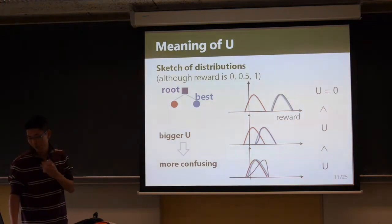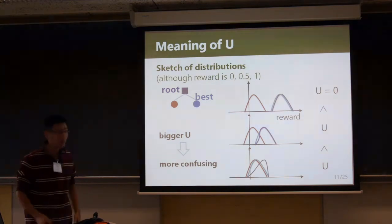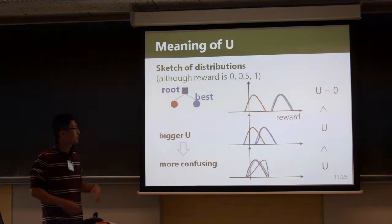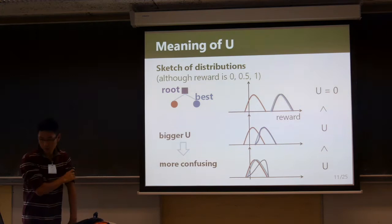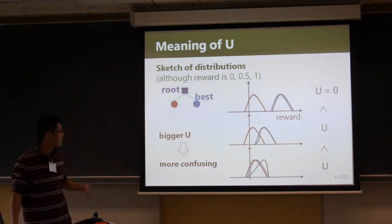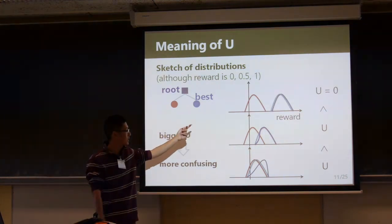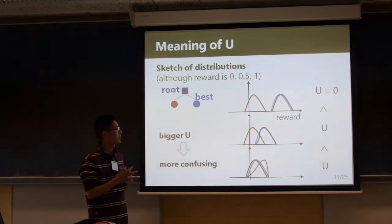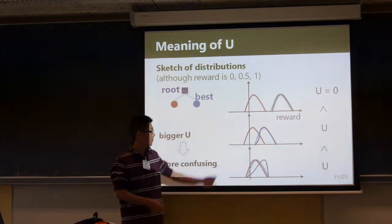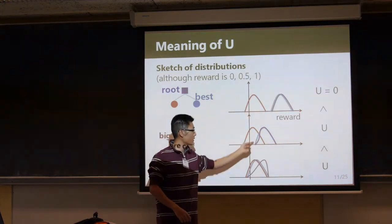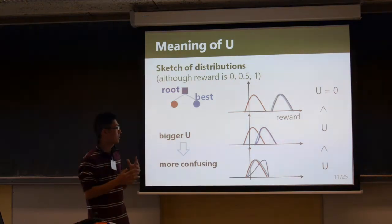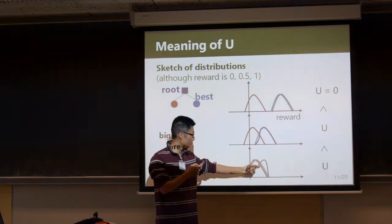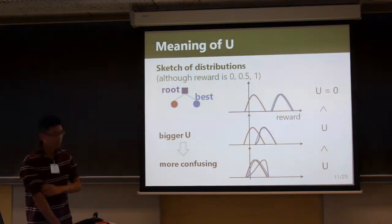To explain the meaning of U-value, I show some examples. In our experiment, discrete reward is used. In the first example, the distribution of the best child is apart from the others, so the root distribution is the same as the best one and U-value is zero. In another case, these distributions are overlapping and U-value is a positive value. When overlap is more, U-value is even higher.